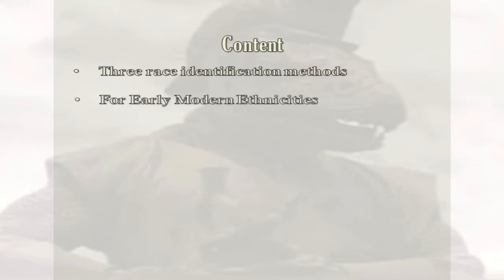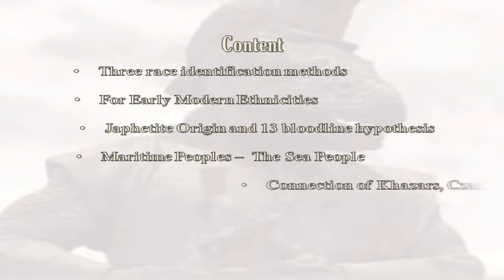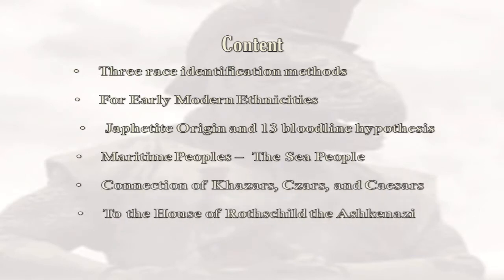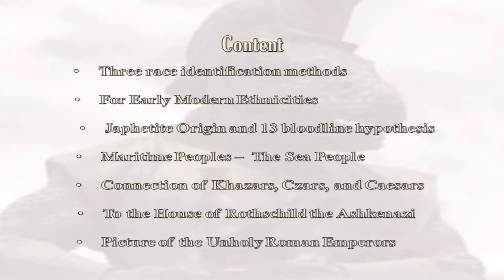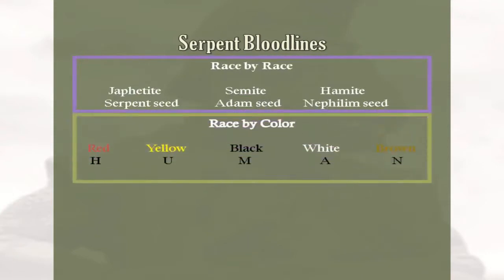Here's the basic outline: we will follow three race identification methods for early modern ethnicities, Japhethite origin and the 13 bloodline hypothesis, maritime peoples, the sea people connection to Ksars, Czars, and Caesars, to the House of Rothschild, the Ashkenazi, and a picture of the unholy Roman emperors.